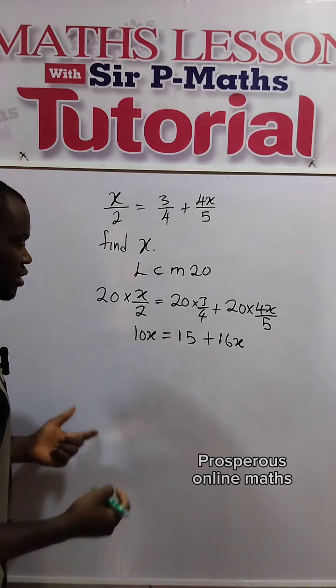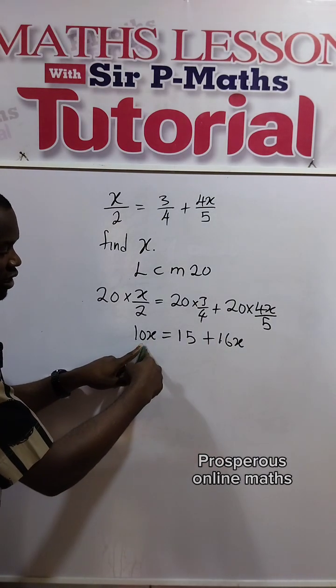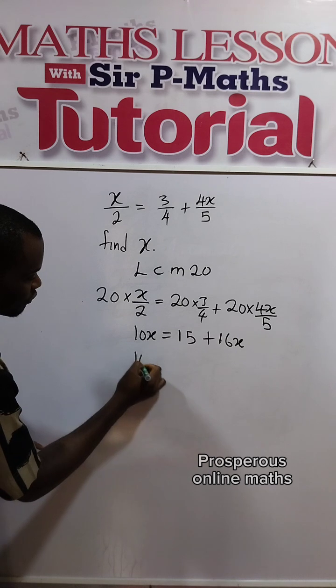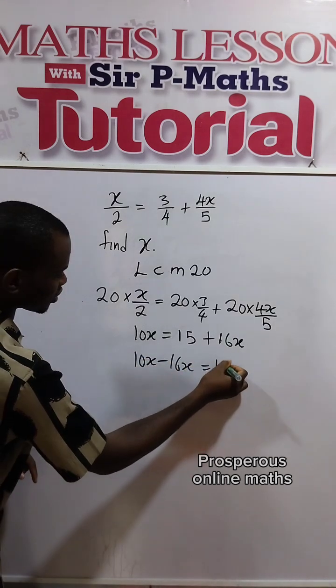Let's collect like terms and simplify. 16x will come over to the left side to meet 10x. So we have 10x minus 16x equals 15.